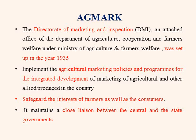The Directorate of Marketing and Inspection, which is known as DMI, was established in the year 1935 with an aim in welfare of agriculture as well as for the farmers. They implement several agriculture marketing policies and also several programs for the development of the sector. Along with that, they safeguard the interest of all the farmers as well as the consumers, and they also develop a close relationship between the central and the state governments.